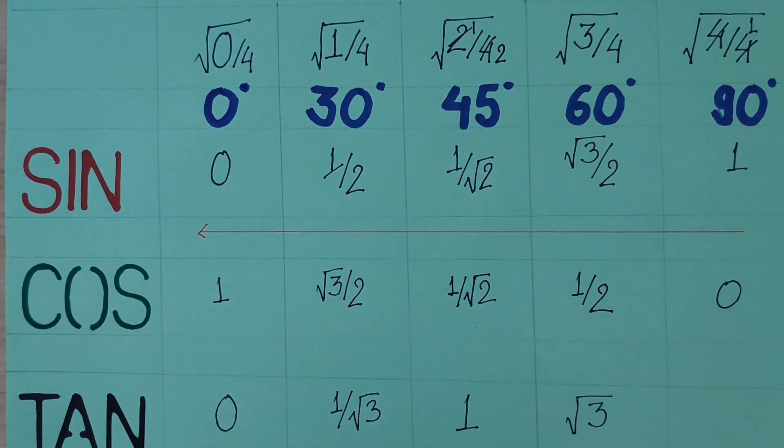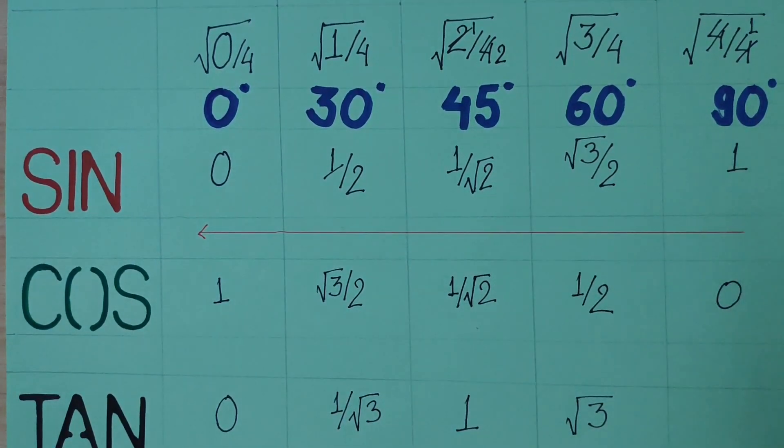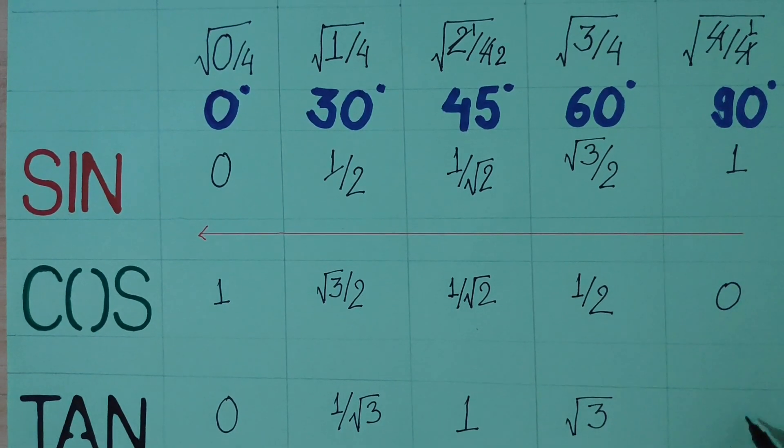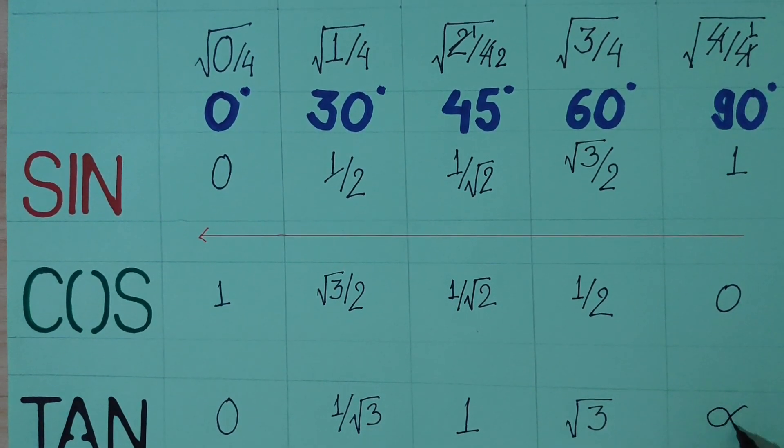Finally, tan 90 is sin 90 over cos 90, which is 1 over 0, and 1 over 0 is undefined and infinity.